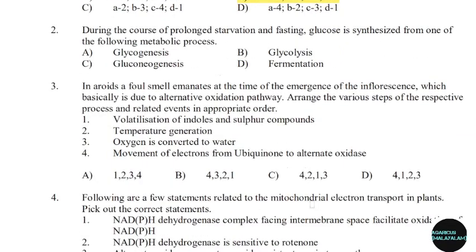2nd question: During the course of prolonged starvation and fasting, glucose is synthesized from one of the following metabolic processes. Correct answer: Option C — Gluconeogenesis.